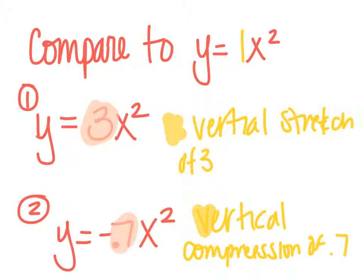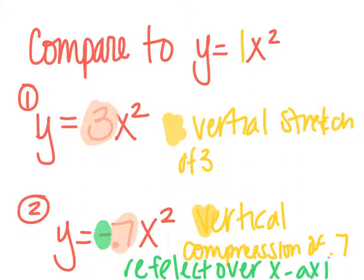And then the other part of this that I have to worry about is this negative sign here. So what this negative does is it reflects the graph over the x-axis. So it's going to make it open down is what it's going to end up doing.